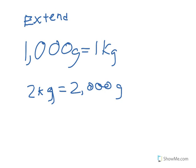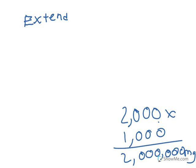So we know that 1 gram equals 1,000 milligrams, so now we have to do 2,000 times 1,000. We have to multiply it because we're going from a larger unit to a smaller unit. So we got the answer, and it's 2 million milligrams in 2 kilograms.